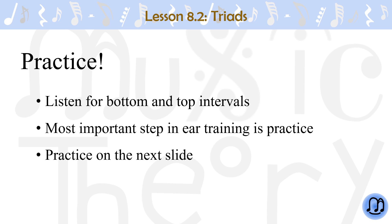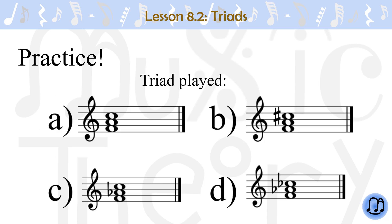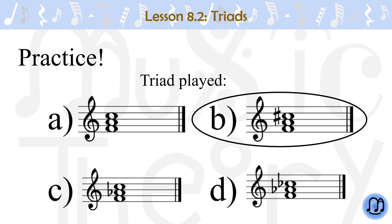Let's try it on the next slide. Triad played. B. The interval between the bottom two notes is a major third, and the interval between the top two notes is a major third.